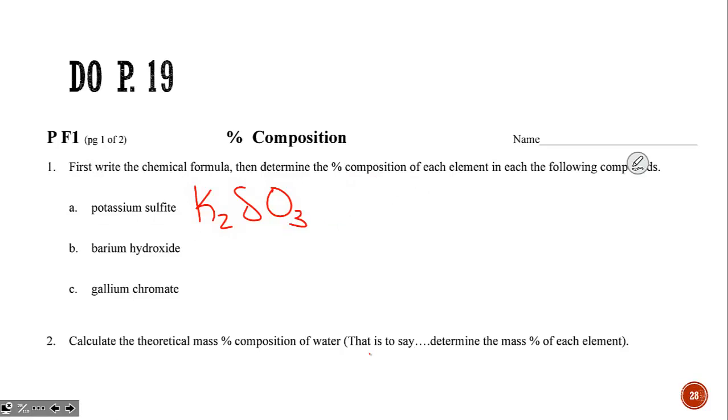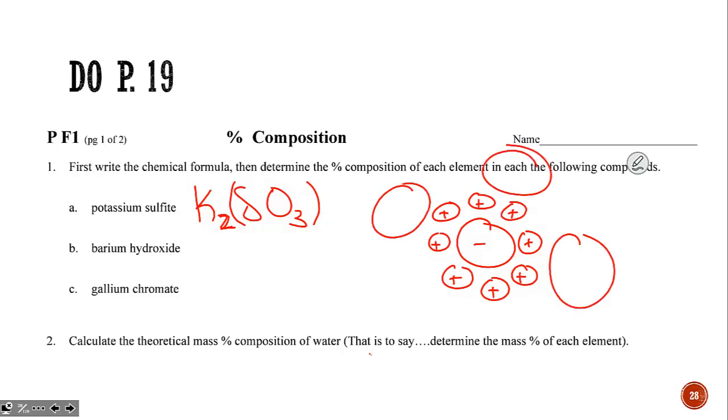However, this formula of two potassiums and one sulfite is not realistic. Potassium surrounds sulfite, and each potassium is surrounded by a sulfite ion, on and on forever. When we write the formula based on charge, it's the simplest ratio of one ion to another.